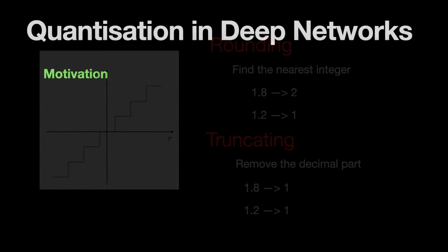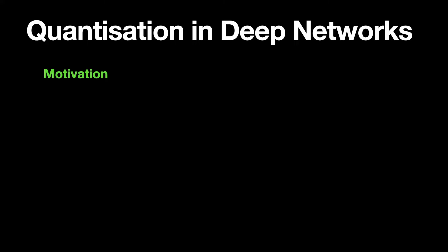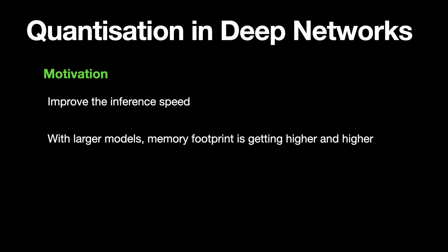In whichever way we proceed, the main motivation behind quantization of deep neural networks is to improve the inference speed, as it's needless to say that inference and training of neural networks is computationally quite expensive. With the advent of large language models, the number of parameters in these models are only increasing, meaning that the memory footprint is only getting higher.